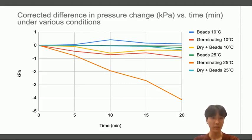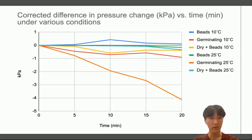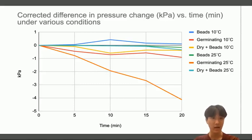Another observation that can be made is that when comparing the same type of seed, the 25-degree one experienced a greater decrease in pressure than the 10-degree one, meaning that the 25-degree seeds undergo cellular respiration at a faster rate. This can be attributed to higher temperatures increasing average kinetic energy, which increases collision frequency and subsequently enzymatic activity and rate of catalysis.